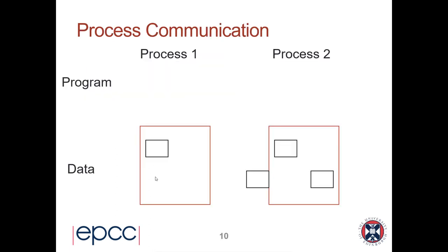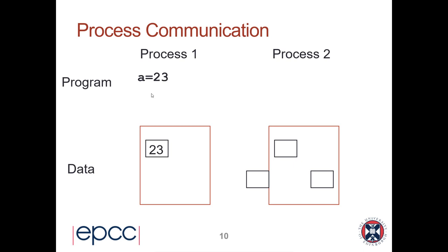Here's a little diagram to illustrate how process communication works in practice. We have process 1 with some data in its memory, and process 2 with its own memory and data. Think of process 1 running on my laptop here in Edinburgh and process 2 running on my collaborator's laptop in Australia. I want to send some data from Edinburgh to Australia, so I run a program which sets variable A to 23 in my memory space, and now I want to transfer that data to process 2.